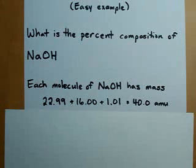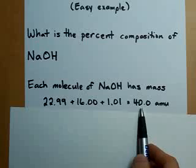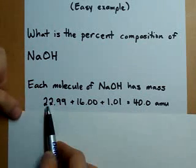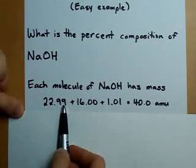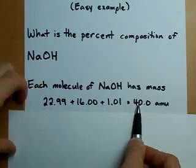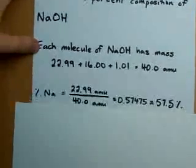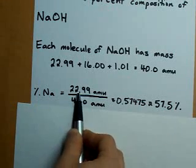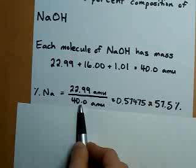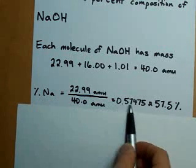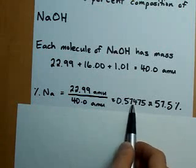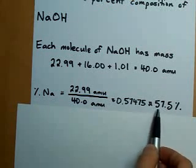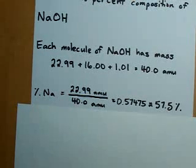Now, what percentage of that 40 is sodium? Well, 22.99 of that 40 is sodium. So to calculate the percentage of sodium, we take 22.99 and divide it by 40. We get 0.57475, and it goes on and on, which is approximately 57.5%.